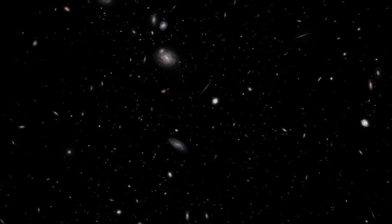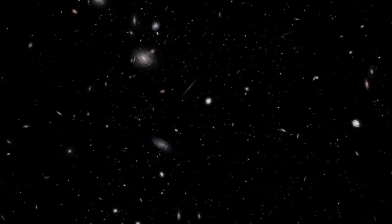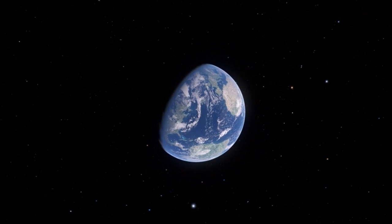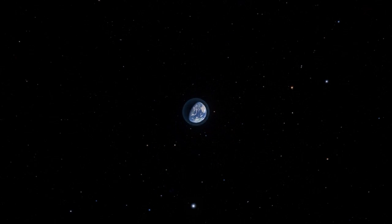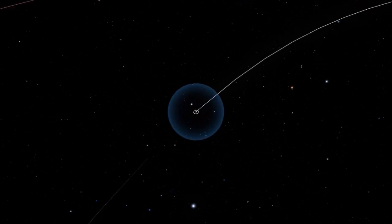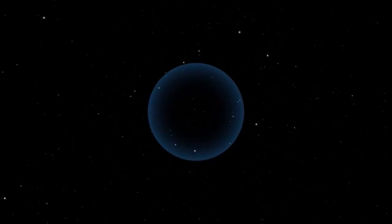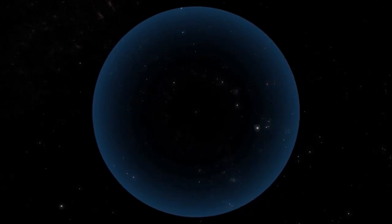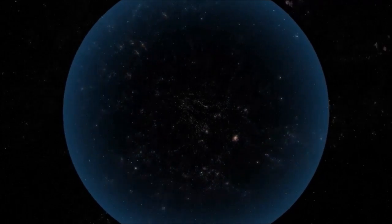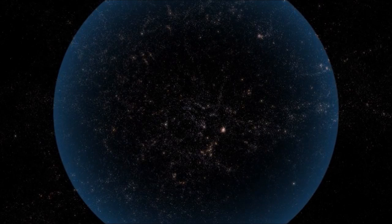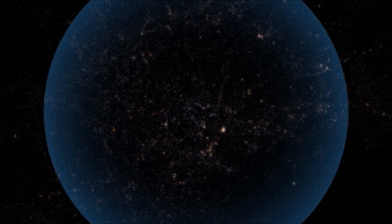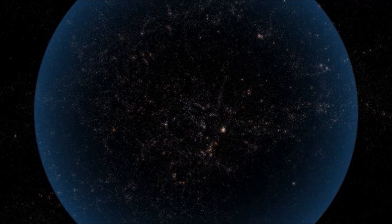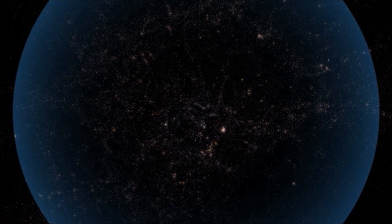These are only the galaxies within the so-called observable universe. This consists of all objects that can in principle be observed with telescopes like Hubble, those from which light has had time to reach us since the beginning of the universe. Beyond this limit, known as the cosmological horizon, the universe continues. Just how far it goes is yet an unanswered question.